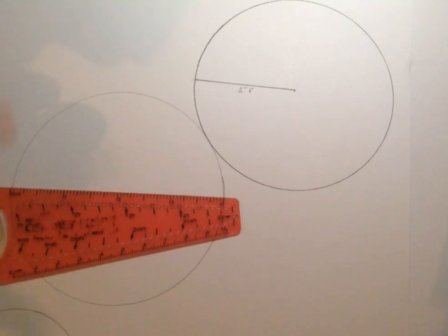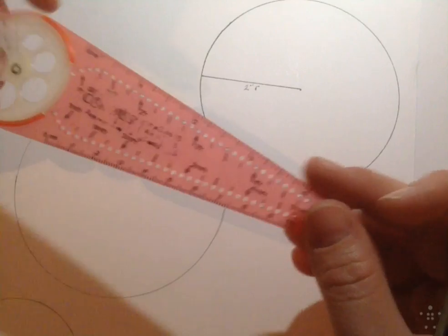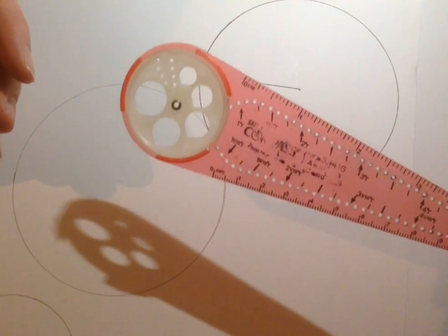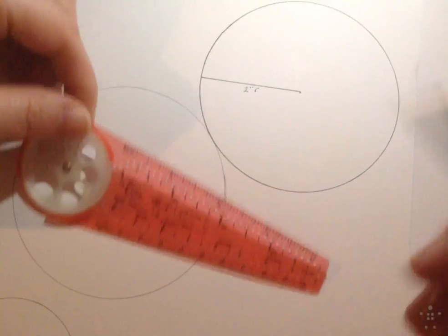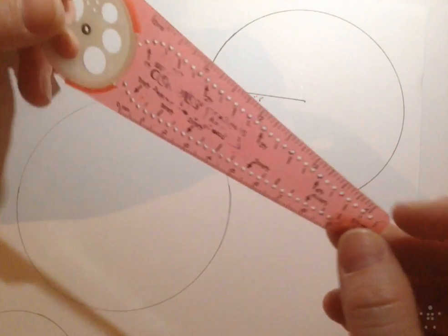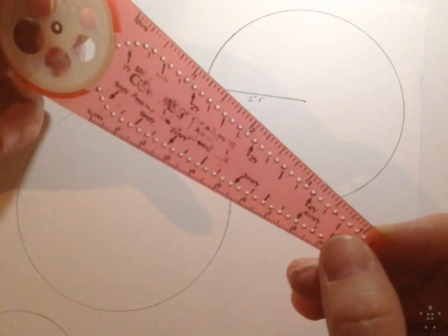So that is basically how you use this compass. It's very straightforward, very easy to use. I like it because you can see through it, whereas the metal ones, they are hard to manipulate. So this is the compass that we use in this class.